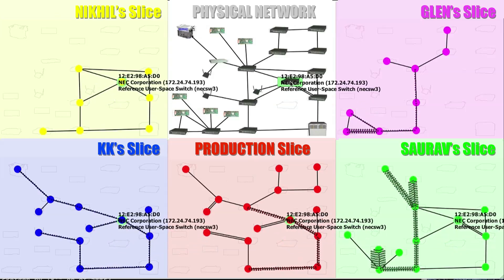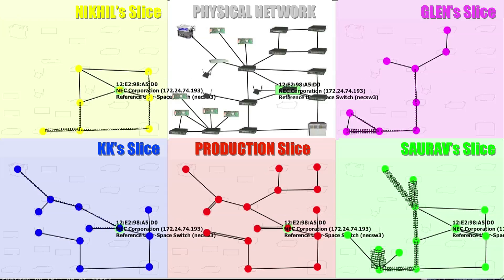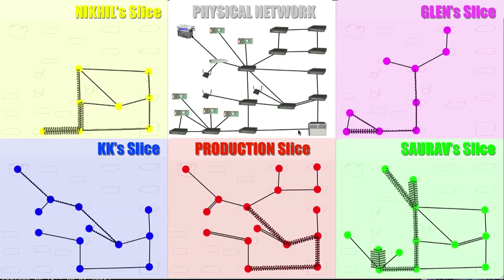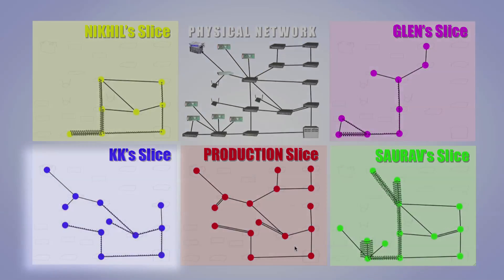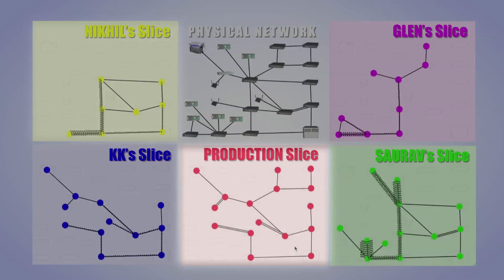Given FlowVisor's strong isolation capabilities, we now have a novel technique to roll out new services. Specifically, users can selectively delegate control of a subset of their traffic to a new service — that is, they can opt in to the new service. For example, user Doug may decide that he wants his voice over IP traffic handled by KK's wireless slice for low latency, his web traffic handled by Nikhil's load balancing slice optimized for high throughput, and the rest of his traffic handled by a default production slice.